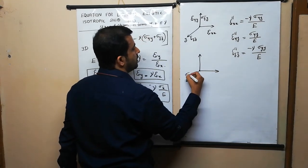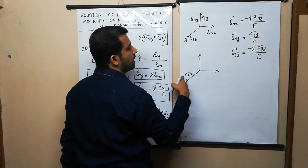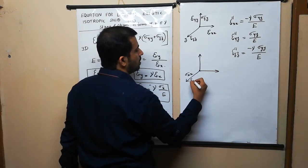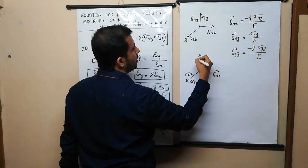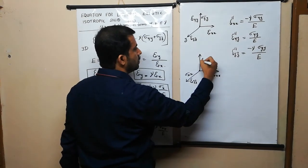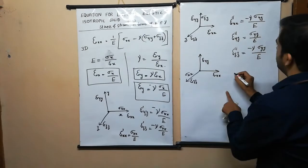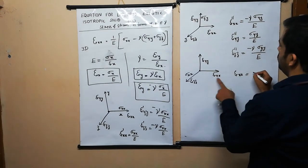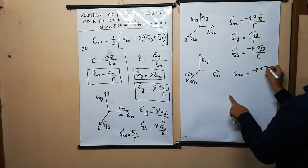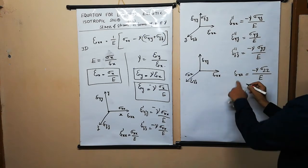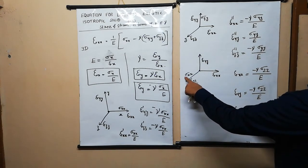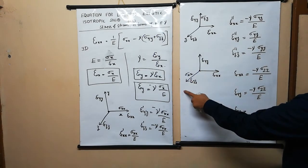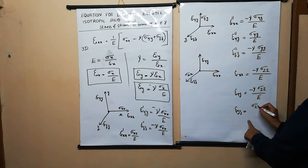Now let us consider the case where sigma_zz is acting. Because of sigma_zz, there will be a normal strain epsilon_zz, and lateral strains epsilon_xx and epsilon_yy. Epsilon_xx (triple dash) is equal to minus mu into sigma_zz divided by E. Epsilon_yy (triple dash) is equal to minus mu into sigma_zz divided by E. Epsilon_zz (triple dash) is equal to sigma_zz divided by E.